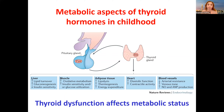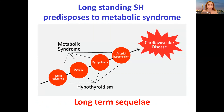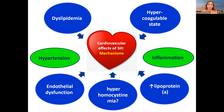The question is: does subclinical hypothyroidism predispose to metabolic syndrome? Some references say yes; others say it needs a very long-term time course in children — it's not very common, but should be screened for. It's not as fast as in adults. Here you can see the mechanisms of how cardiovascular affection occurs in children with subclinical hypothyroidism.